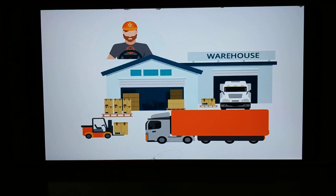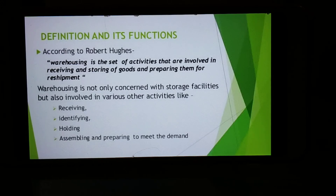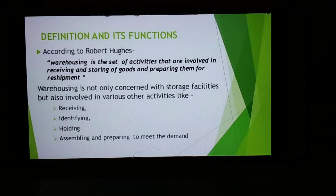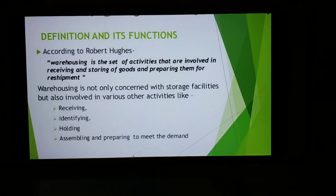Our next topic is Godown or Warehouse. A place for storing goods is called a warehouse. After production, every product cannot be immediately sold or consumed, so storage becomes essential. Godowns are necessary for preserving perishable goods. Some goods have only seasonal demand but production takes place throughout the year; such goods are stored in the godown and supplied when demanded. Warehouse is also involved in activities like receiving, identifying, holding, assembling, and preparing to meet demand. According to Robert Hughes, warehousing is a set of activities involved in receiving and storing goods and preparing them for reshipment.